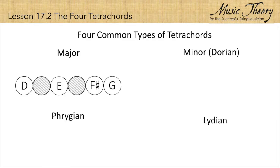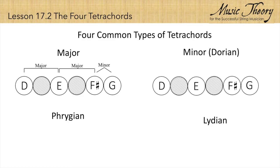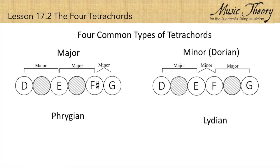A major tetrachord is built with a major second on the bottom, a major second in the middle, and a minor second on the top. In a minor tetrachord, the third note is lowered a half step, so the sequence of seconds goes major, minor, major.